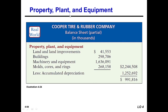Property, plant and equipment includes land and improvements, buildings, machinery and equipment. The total less accumulated depreciation gives us the net figure that appears on our balance sheet.